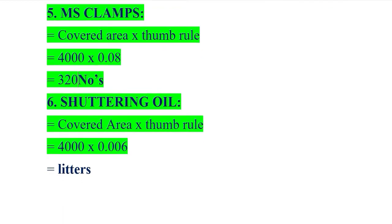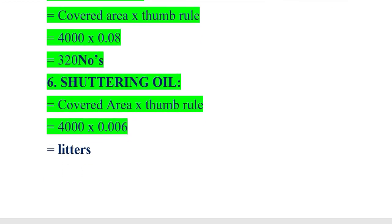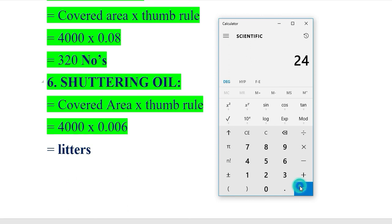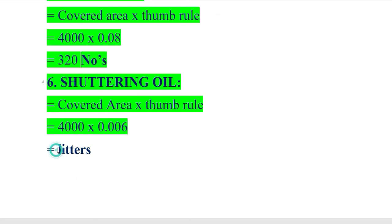The last item to calculate is shuttering oil, measured in liters. Covered area into thumb rule: 0.006. Calculating the shuttering oil required: 4000 × 0.006 = 24. We require 24 liters of shuttering oil for our shuttering work.